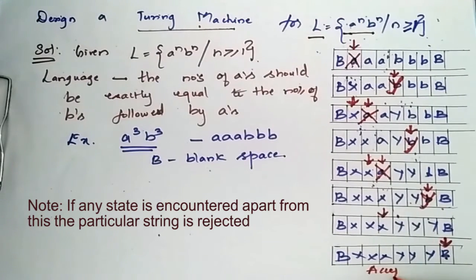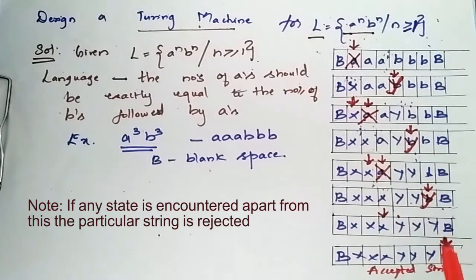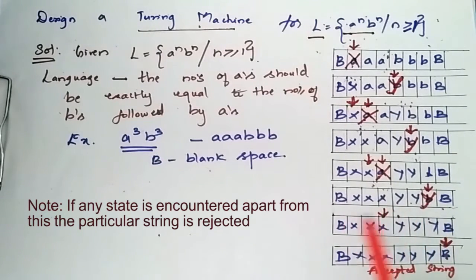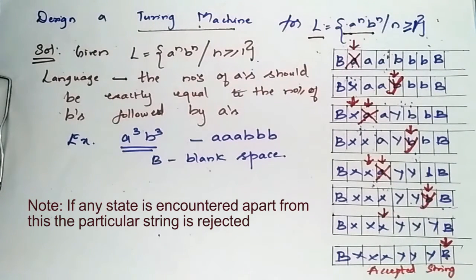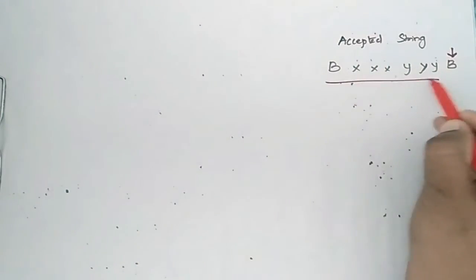When each and every 'a' is replaced by 'x' and each and every 'b' is replaced by 'y', we verify that the total number of a's and b's exchanged are equal. This becomes an accepted string when the head encounters a blank space after the y's. Now we proceed to draw the Turing machine for this accepted string.